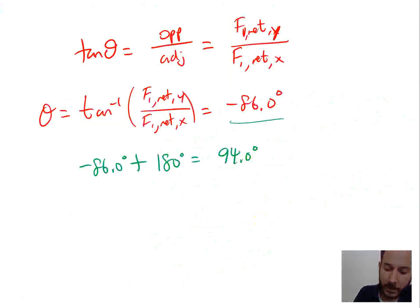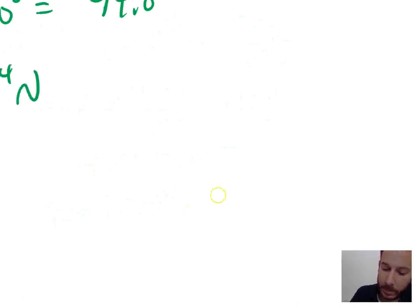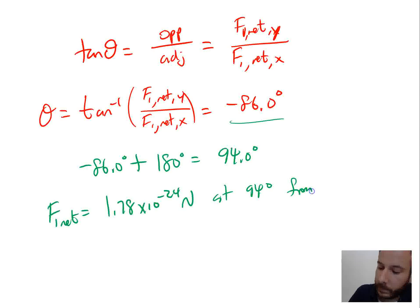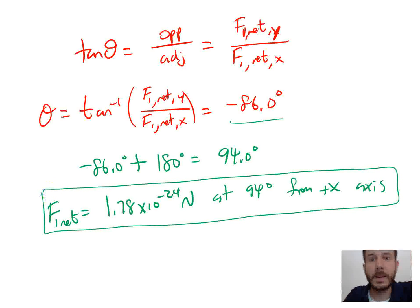So the final answer: F1 net is 1.78 times 10 to the negative 24 newtons at 94 degrees. That's all for the examples.